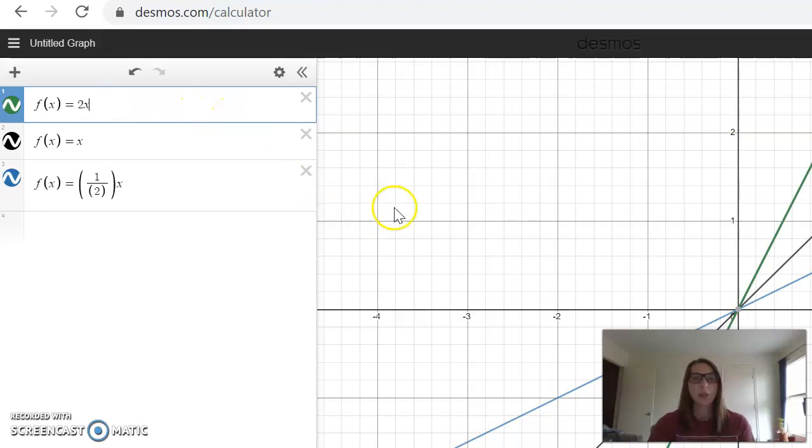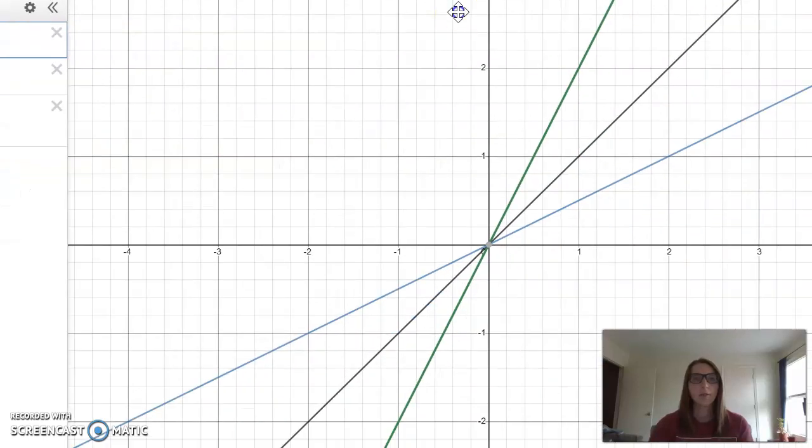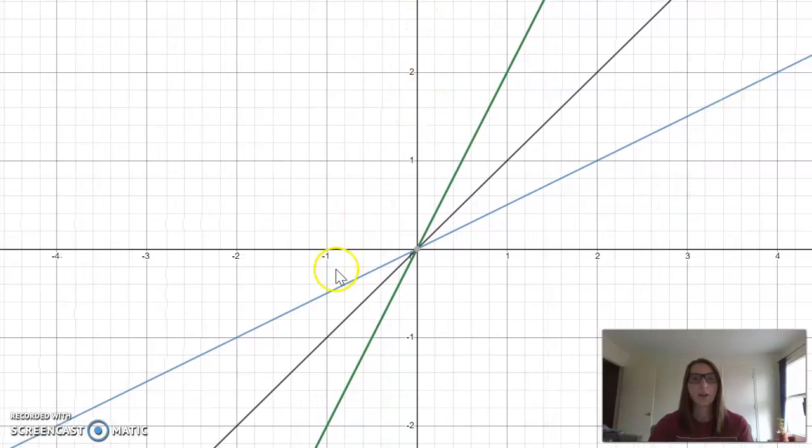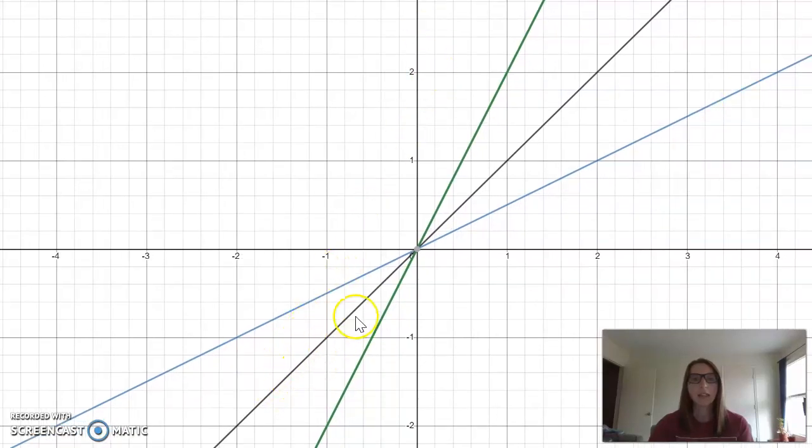And that has created a third function for me. So you can see the functions here. The parent function, f(x) = x, is this black line going through the point of origin. The blue line here is h(x) = 1/2x. It is stretching towards the x-axis.